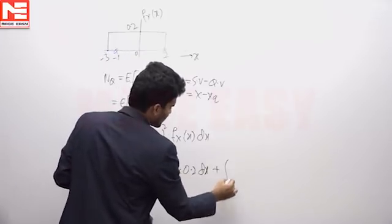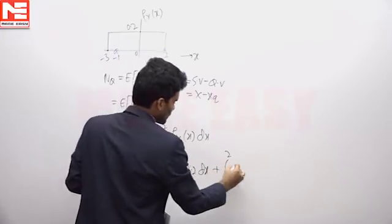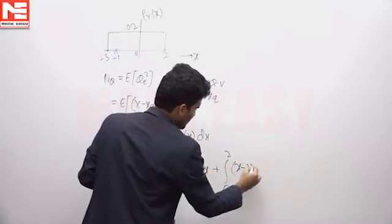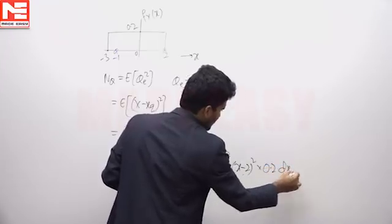Plus, if random variable X takes the values from 0 to 2, then quantized to 2 volts. XQ is 2 volts, so X minus 2 square. FX of X is 0.2 DX.